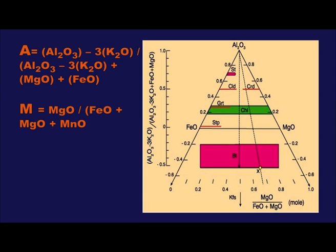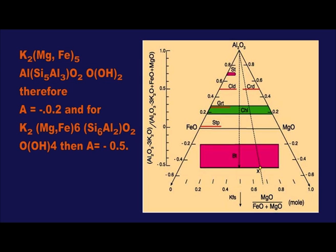The A value is thus excess Al2O3 after subtracting the amount consumed in albite, anorthite, plagioclase, and muscovite. The chemical formula of muscovite is K2O·3Al2O3·6SiO2·2H2O, and therefore 3K2O is subtracted from Al2O3. If the A value for a biotite is calculated, it becomes apparent that this must be a negative number.